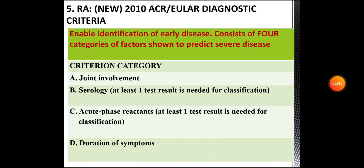What are the criterion categories? The first is A: joint involvement, which basically refers to the number of joints involved. B: serology — at least one test result is needed for classification. C: acute phase reactants — at least one test result is needed for classification. And D: duration of symptoms.